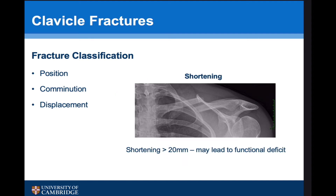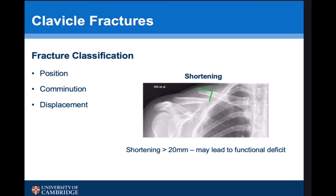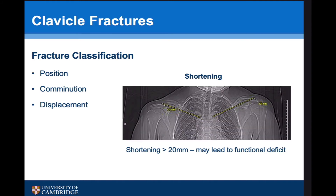As a general rule on plain X-rays, we look at shortening, and shortening greater than 20 millimeters may lead to functional deficit. There is not a lot of agreement as to exactly how we measure that shortening, and a number of different methods have been described. Some people like to compare both sides, however it's very difficult to ensure you've got a true AP of both clavicles, so a more reliable method is to use a CT scan.